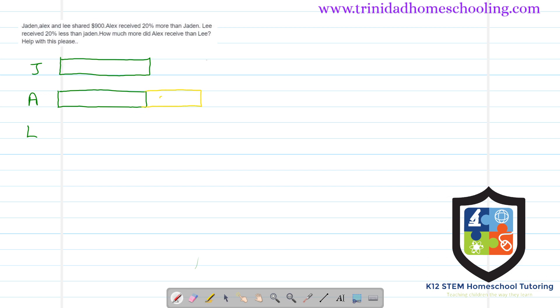Okay, so this is 20% more. They said that Lee received 20% less than Jayden, so if this represents Jayden's amount, then Lee and his 20% less would be a shorter bar. This extra piece between what Lee got and what Jayden has is 20%.